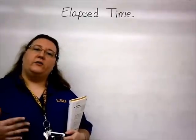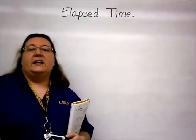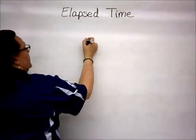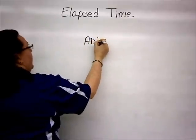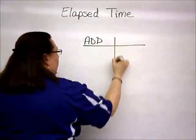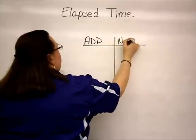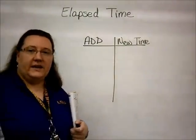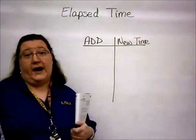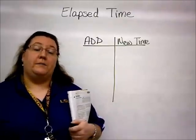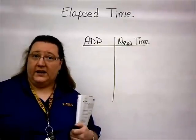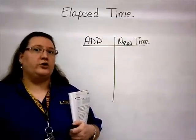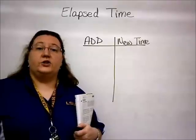The easiest way I have found for students to work with elapsed time is to use something we call a T-chart. The T-charts we use have a column called the 'add' and a column called the 'new time.' Using these T-charts makes it easier for the student to figure out if I start at point A and go to point B, how much time is in between, and if I start at point A and have to add or subtract time, what is the new time?